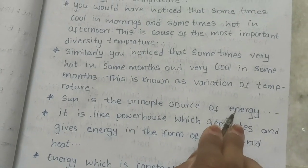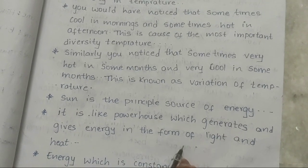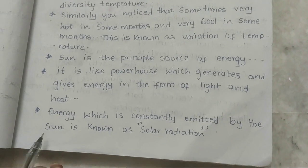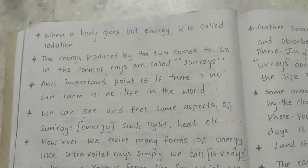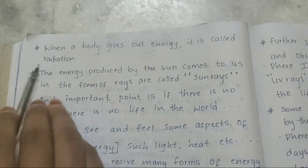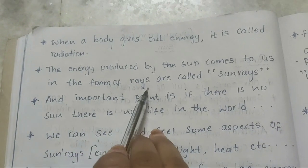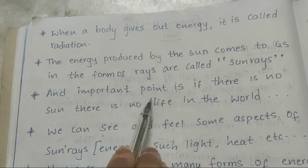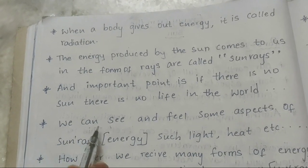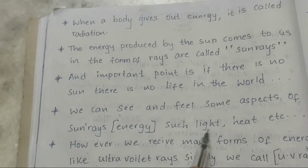The Sun is the principal source of energy. It is like a powerhouse which generates and gives energy in the form of light and heat. The energy which is constantly emitted by the Sun is known as solar radiation. When a body gives out energy, it is called radiation. The energy produced by the Sun comes to us in the form of rays called sun rays. An important point is: if there is no Sun, there is no life in the world. We can see and feel some aspects of sun rays such as light, heat, etc.